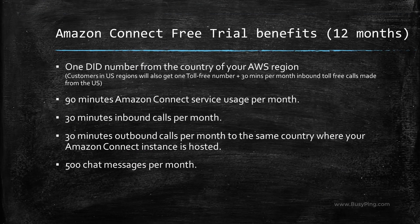As part of the AWS free tier, you will get the following benefits free for the first 12 months: a DID number from the country where your Amazon Connect instance is running. So let's say you create an Amazon Connect instance in Sydney — you can choose a number in Australia for free. However, if you choose a number from any other country, you will be charged as per the charges listed on the pricing page. Keep in mind this is only a DID number and not a toll-free number, with an exception for US regions where you can choose either DID or toll-free.